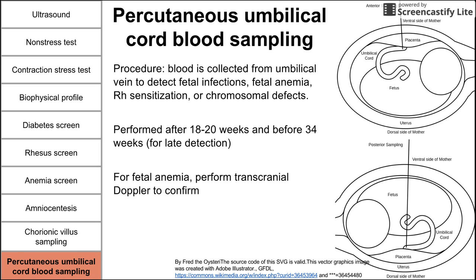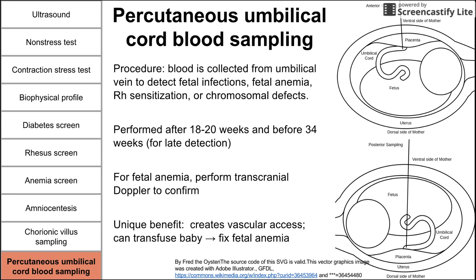If PUBS detects fetal anemia, you can then perform a transcranial Doppler to confirm. One major and unique advantage of PUBS is that it creates vascular access — the only way to transfuse baby in cases of fetal anemia is through PUBS, making it both a diagnostic and therapeutic tool for fetal anemia.